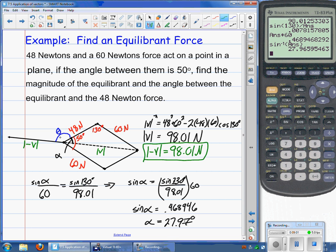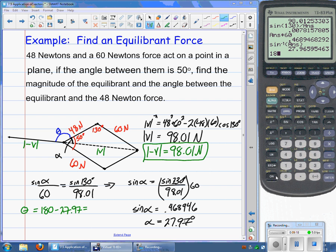So we need to use that law of supplementary angles, which says they must sum up to 180 or to subtract that from 180 degrees. And this should give us theta then. So theta is equal to 180 minus that answer, 27.965.